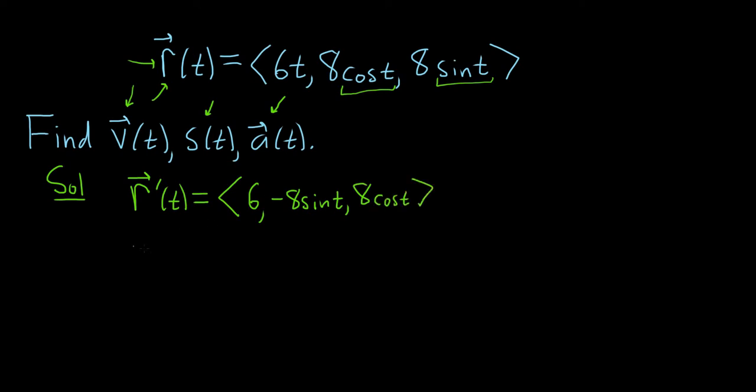So this is 8 cosine t. So this is your velocity function. So v of t is equal to 6, negative 8 sine t, and 8 cosine t. So this would be our velocity.